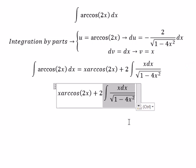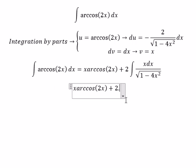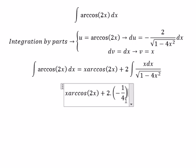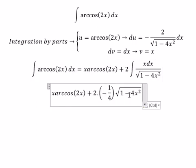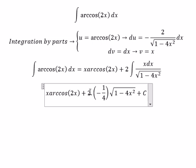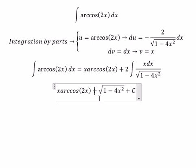This gives us negative 1 over 4 multiplied by the square root plus C, and this gives us negative 1 over 2.